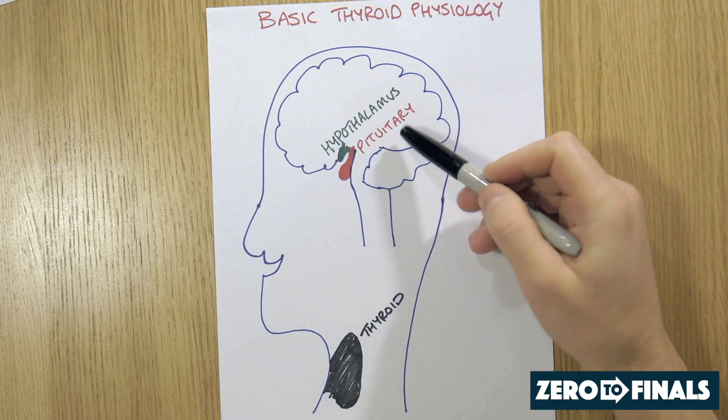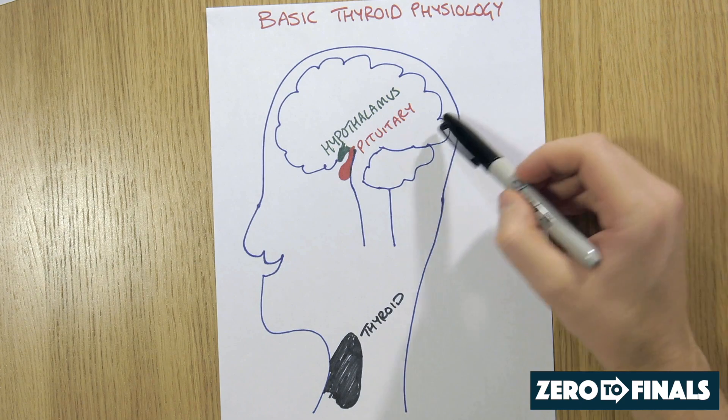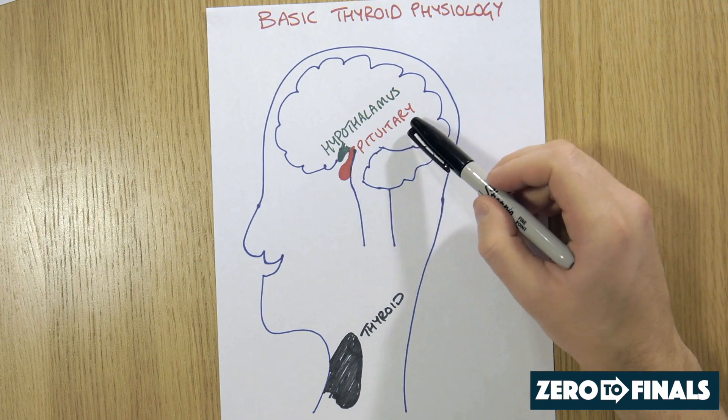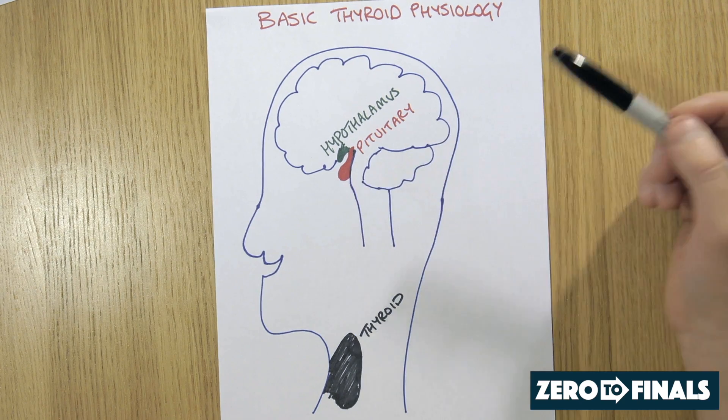The hypothalamus is up high, sort of in the centre of your brain, and the pituitary gland sits underneath it on a stalk.